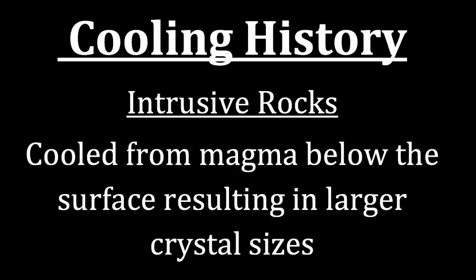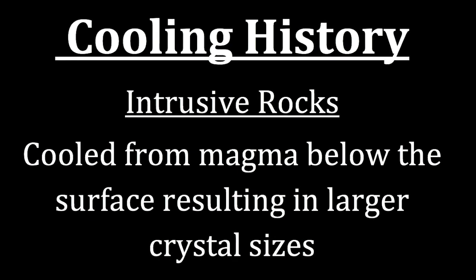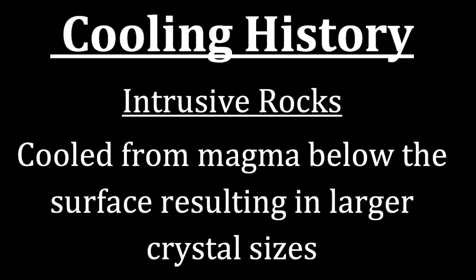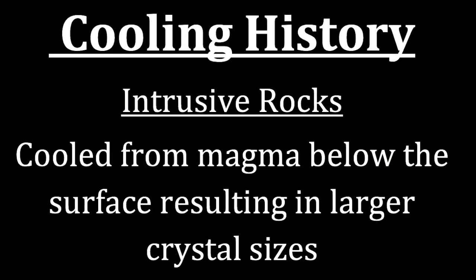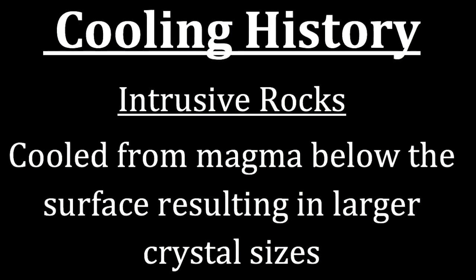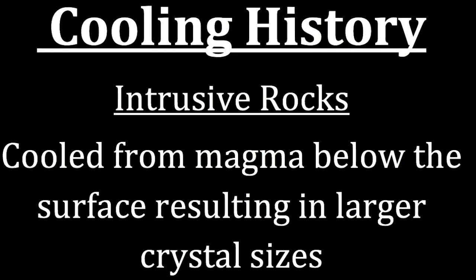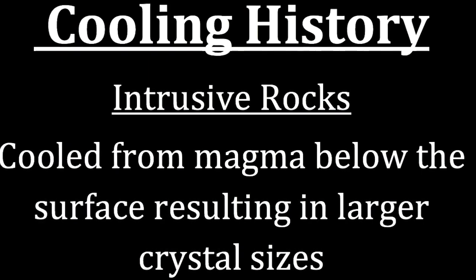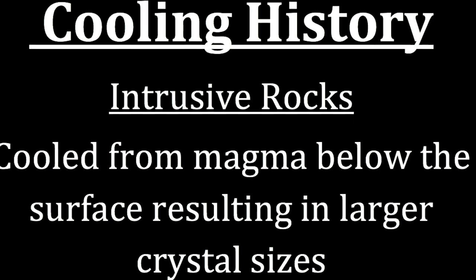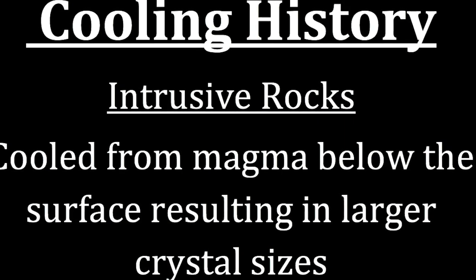The cooling history for both pegmatitic and phaneritic is intrusive. This means the crystals formed while the magma was still below the surface of the earth. Because it takes longer for magma to cool below the surface, there is more time for the crystals to grow, which is why they are larger in size.